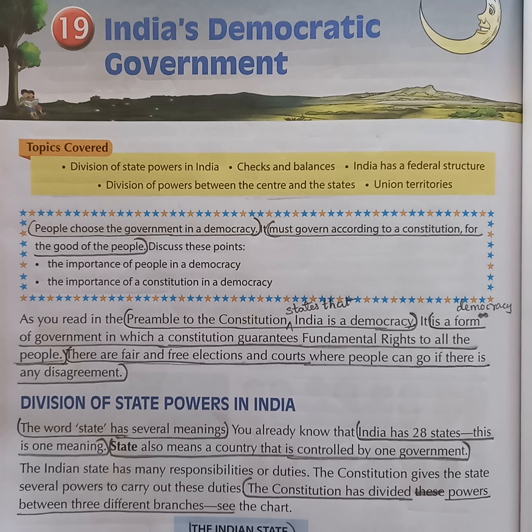Next question: what are the two different meanings of state? Answer: the word state has several meanings. India has 28 states — this is one meaning. State also means a country that is controlled by one government.